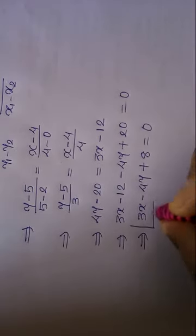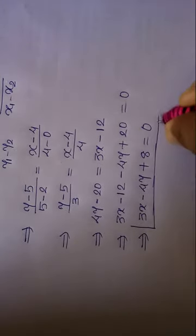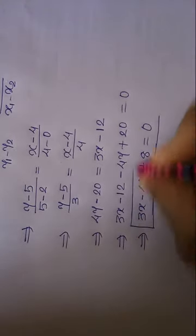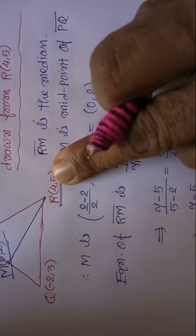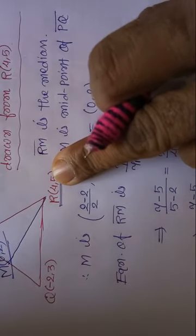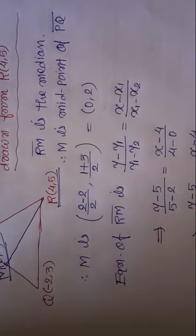The equation of the line is 3x minus 4y plus 8 equals 0, which represents the equation of the median passing through point R(4,5). It is a very easy question.